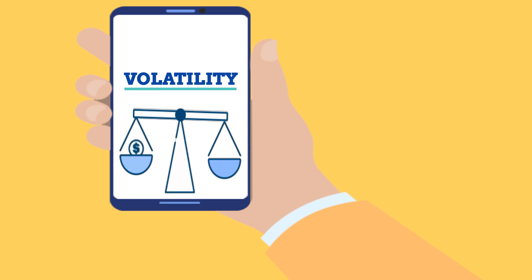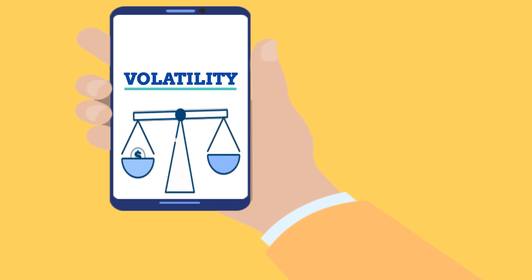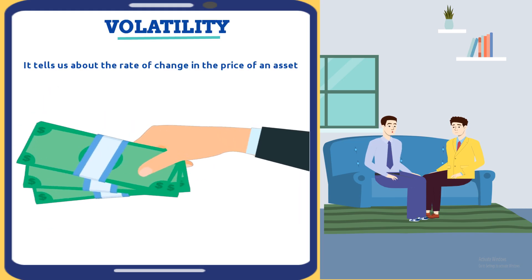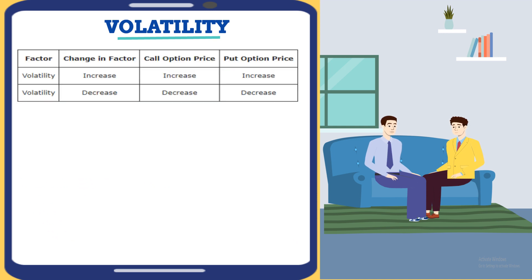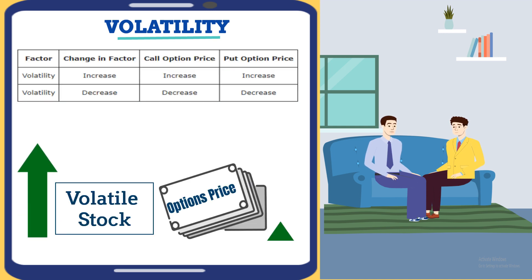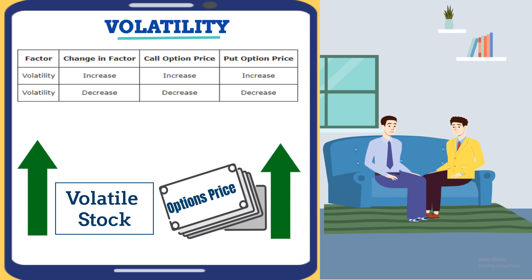Let's move to volatility. Volatility tells us about the rate of change in the price of an asset. The more volatile the asset is, the more expensive its option is. This is because volatile stocks can result in big profits for investors, and thus they cost more. So if I want to invest in a volatile stock, I should expect to pay more for its option.